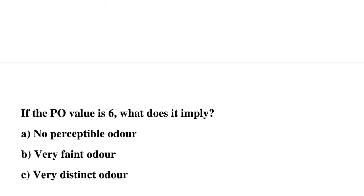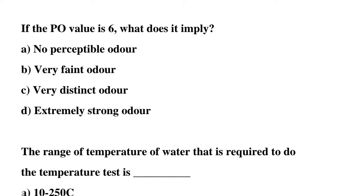Next question: if the PO value is 6, what does it imply? Option A: no perceptible odor, option B: very faint odor, option C: very distinct odor, option D: extremely strong odor. The correct answer is option D: extremely strong odor.